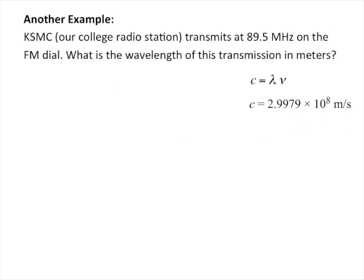Cool. So that's what we have for this video. I'll leave you with this question. If you didn't know, we do have our college radio station, KSMC, and it's at 89.5 megahertz. For the pop-up question I'll put at the end of the video, what is the wavelength of this transmission in meters? And then per normal, you'll get an equation that relates wavelength to the speed of light with frequency and the speed of light value itself. Thanks for watching and learning all about the electromagnetic spectrum.